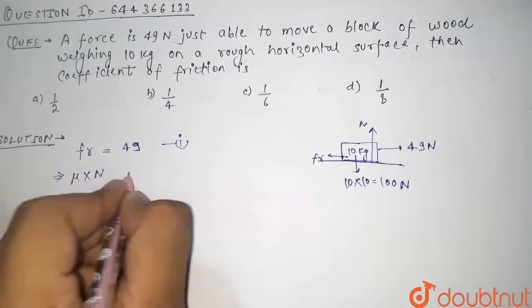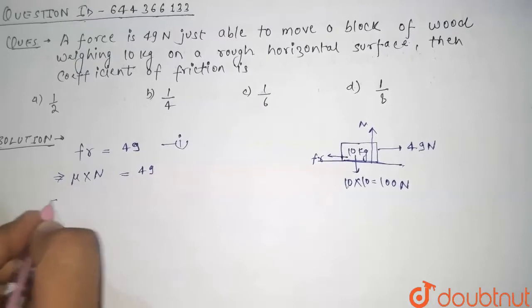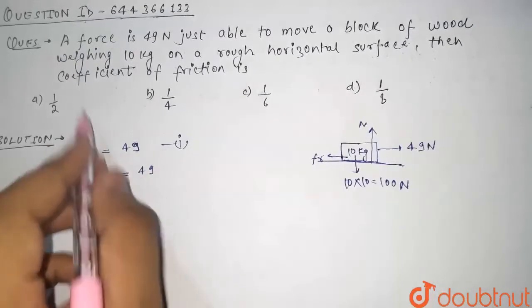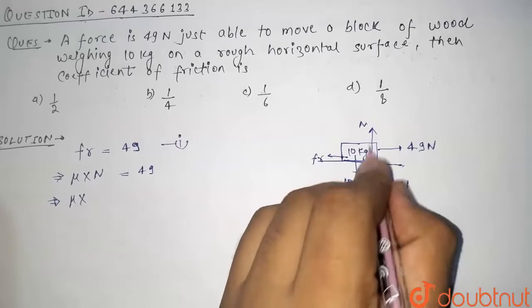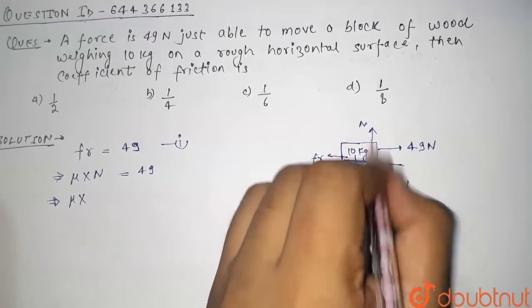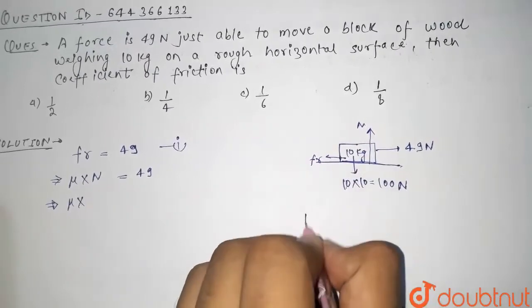So we have to basically find the coefficient of friction, that is mu. And from here we can say that balancing the forces in the upward and downward direction, normal comes out to be 100 newtons, that is mg.